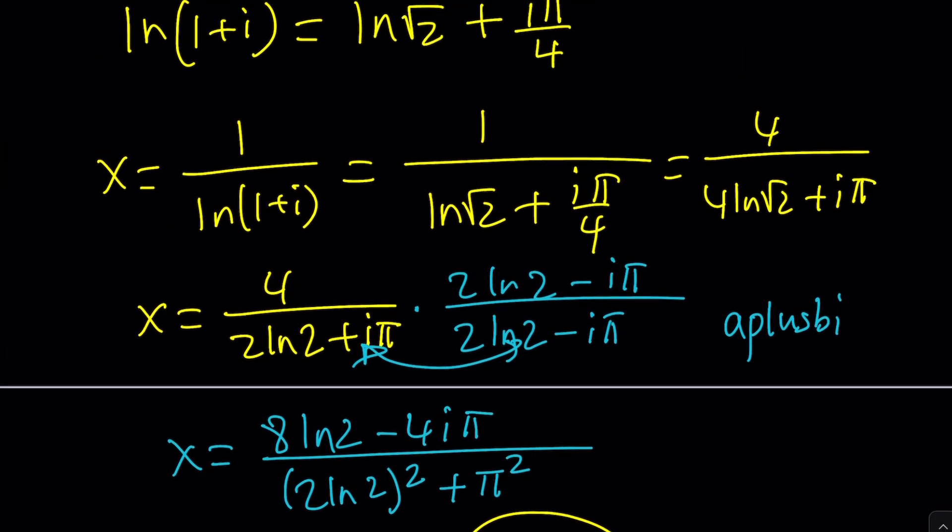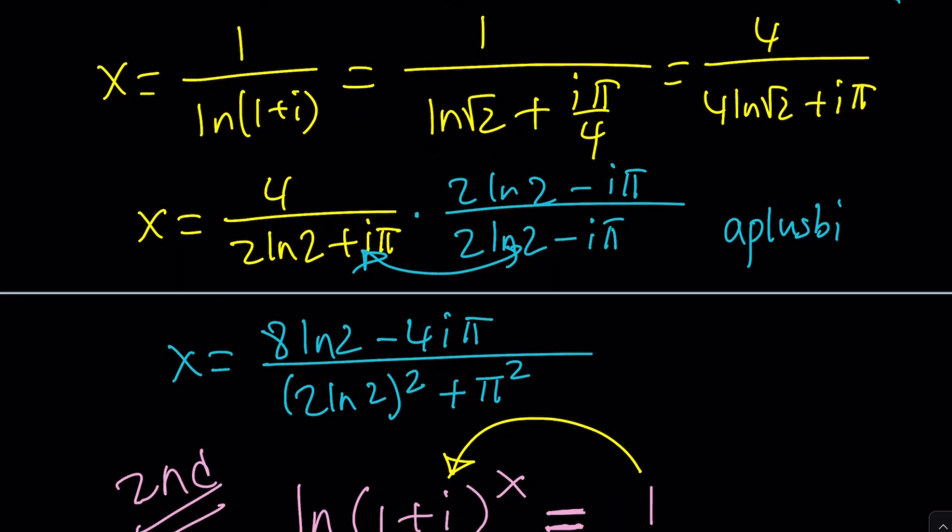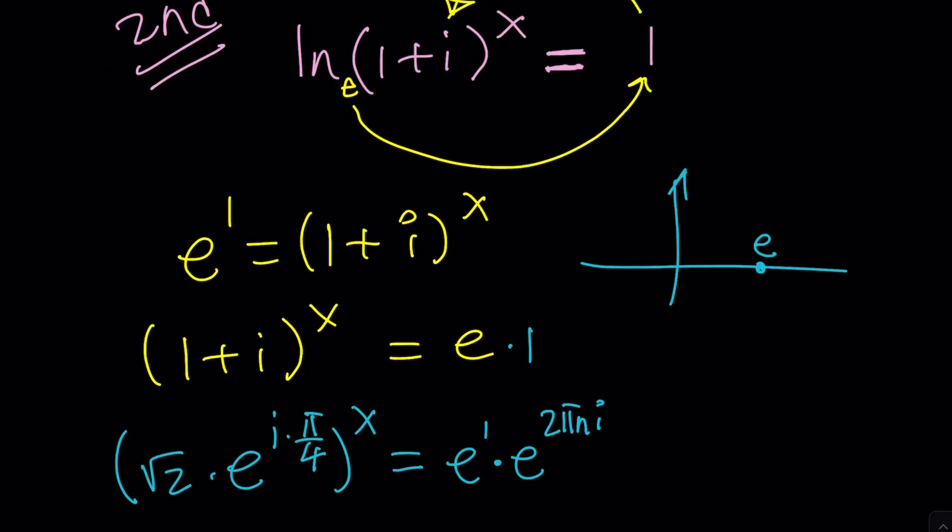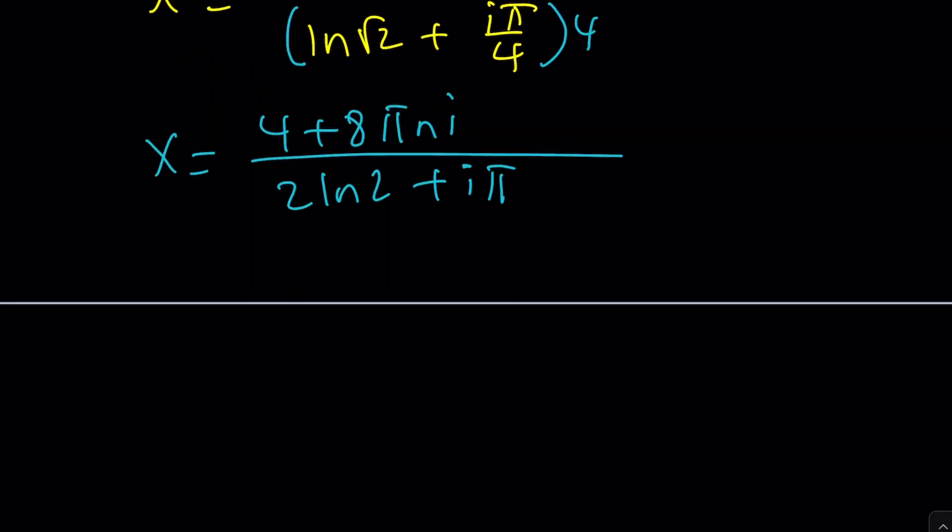But let's take a look at what we got for the first solution. When we first solved this problem, we got something like this before the conjugates: 4/(4ln√2 + iπ). And if you turn 4ln√2 to 2ln2, because √2 is 2^(1/2), you can write this as 2ln2. And these answers are pretty similar. This is the first method, but they're not exactly the same thing. Why are they different?